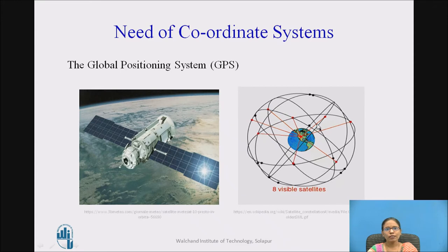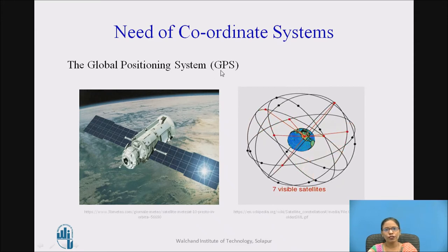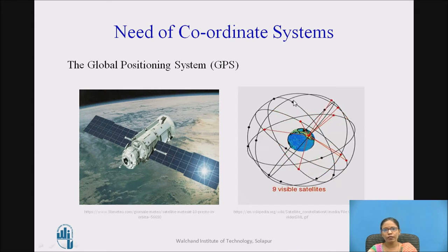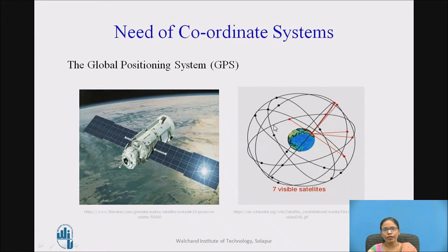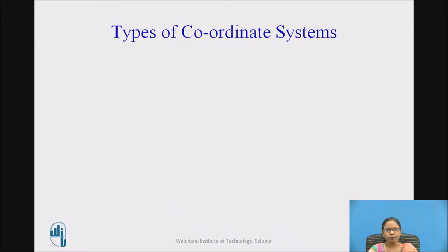The reference directions are called coordinate directions and are usually taken to be mutually perpendicular, also called orthogonal axes. The need for a coordinate system is quite clear in GPS — Global Positioning System — where, in order to understand the position of a satellite, we need the coordinate system.